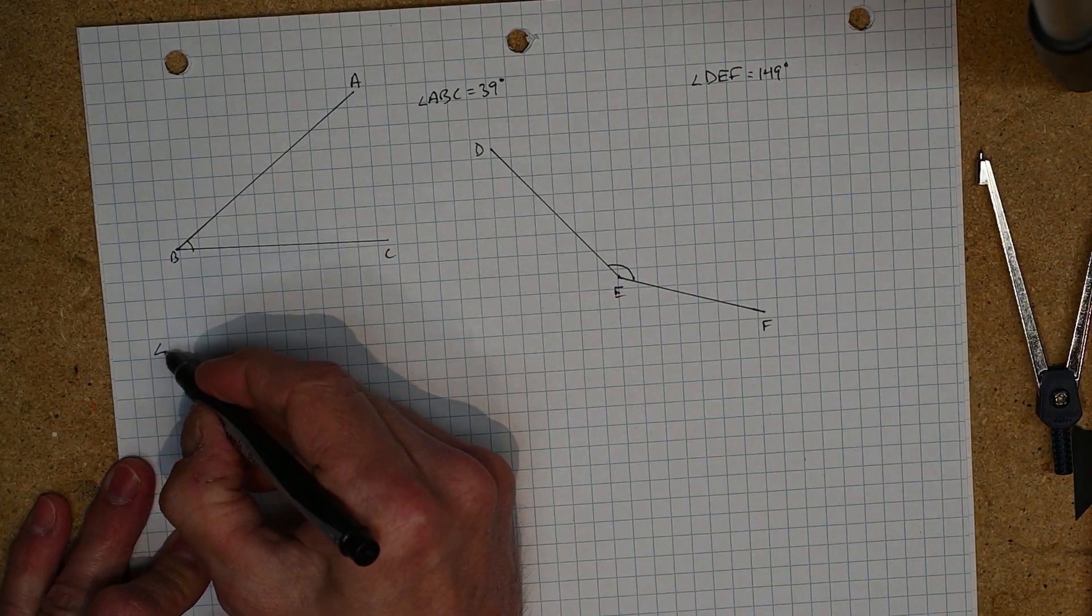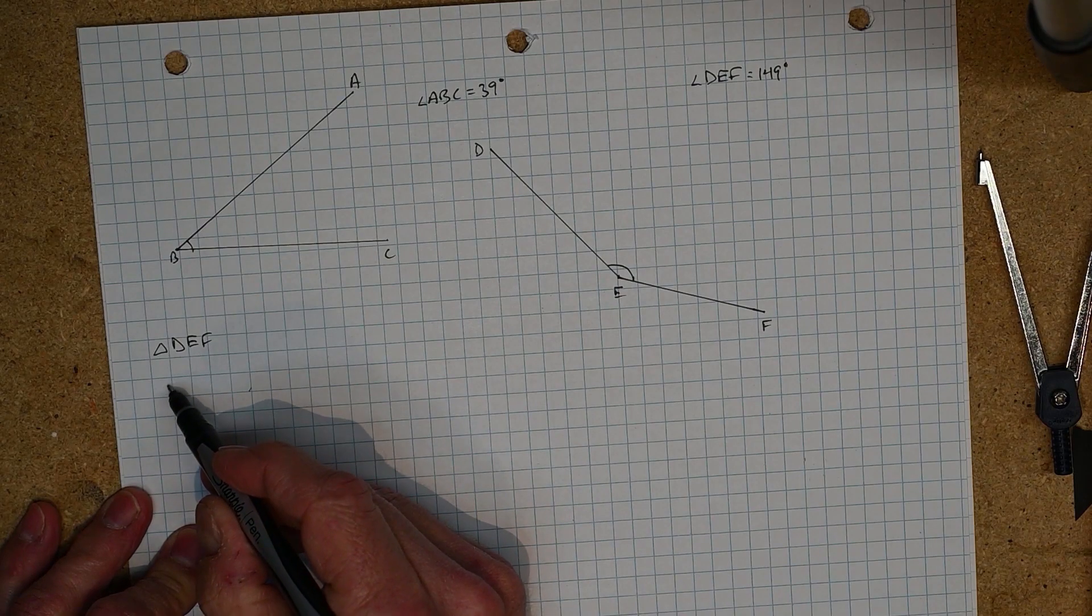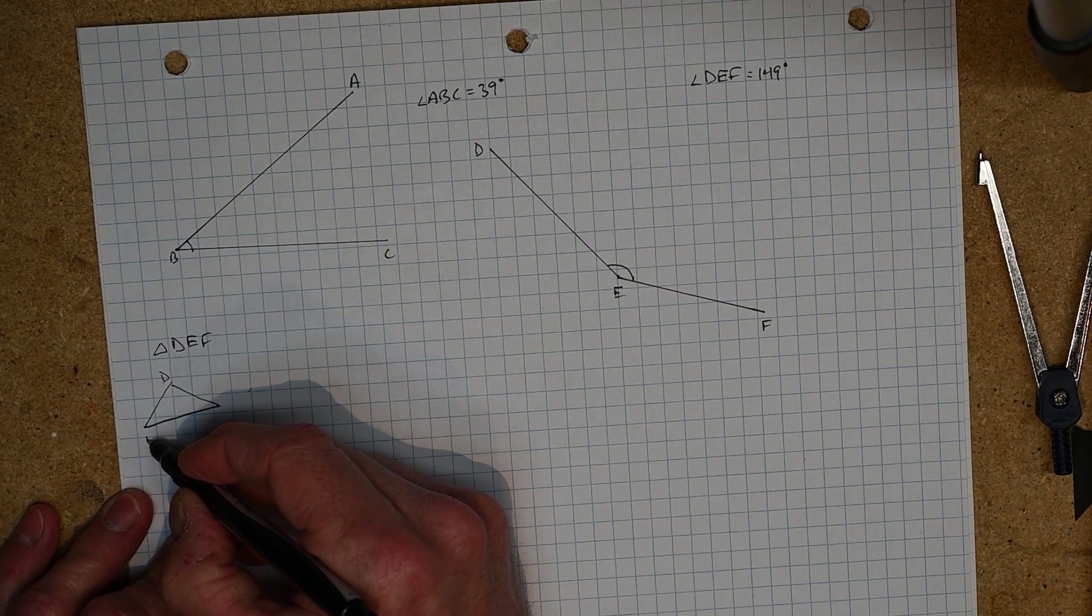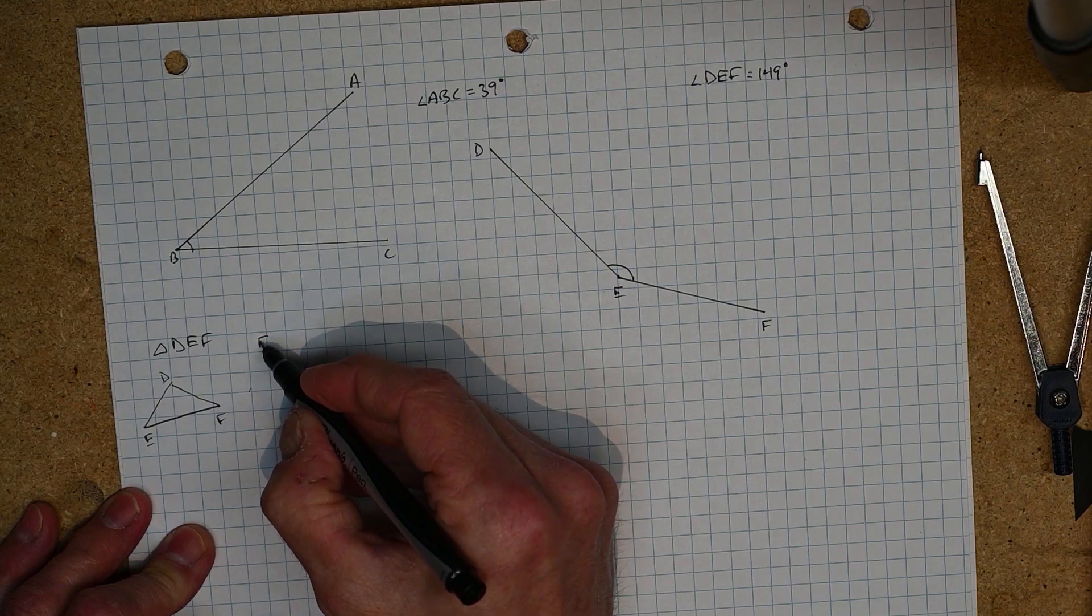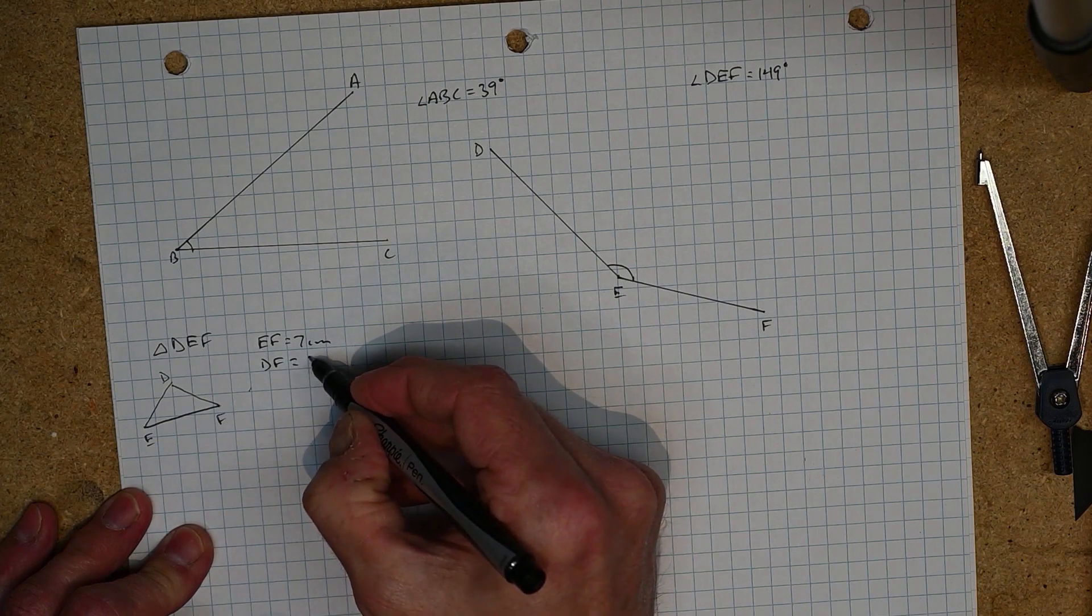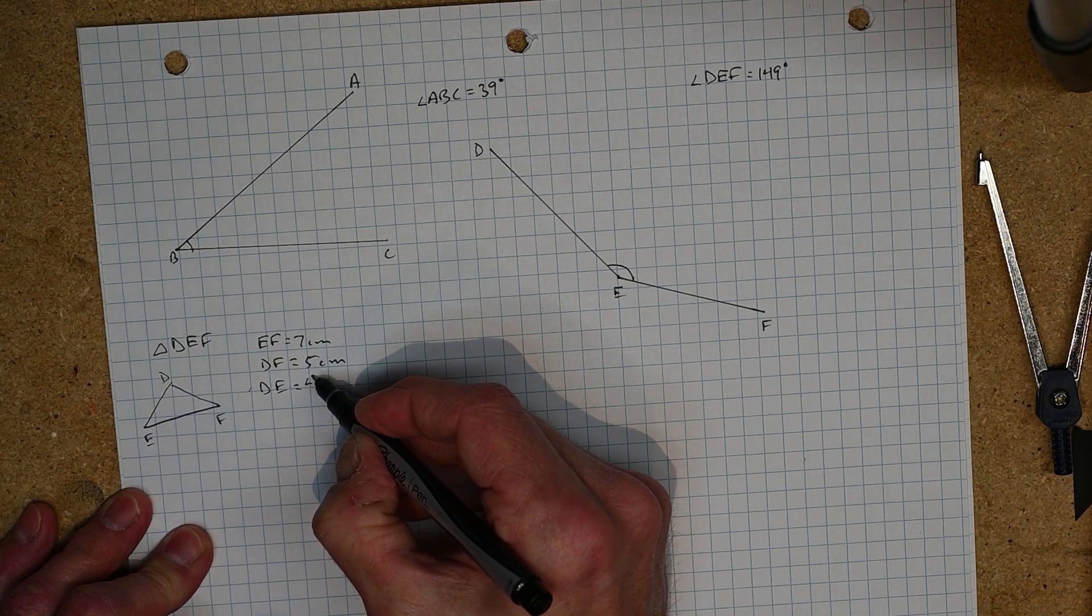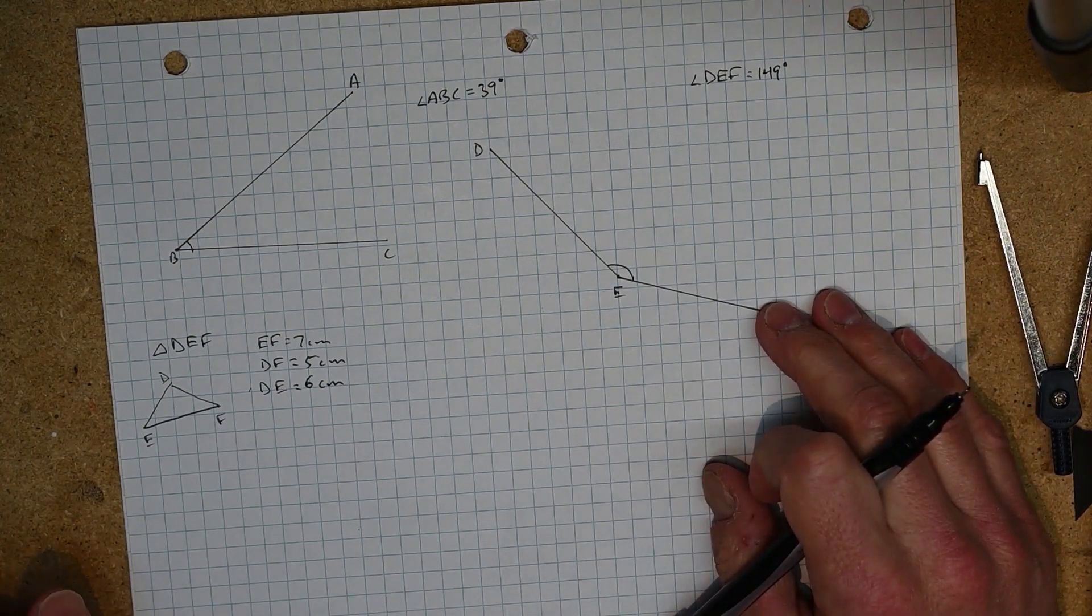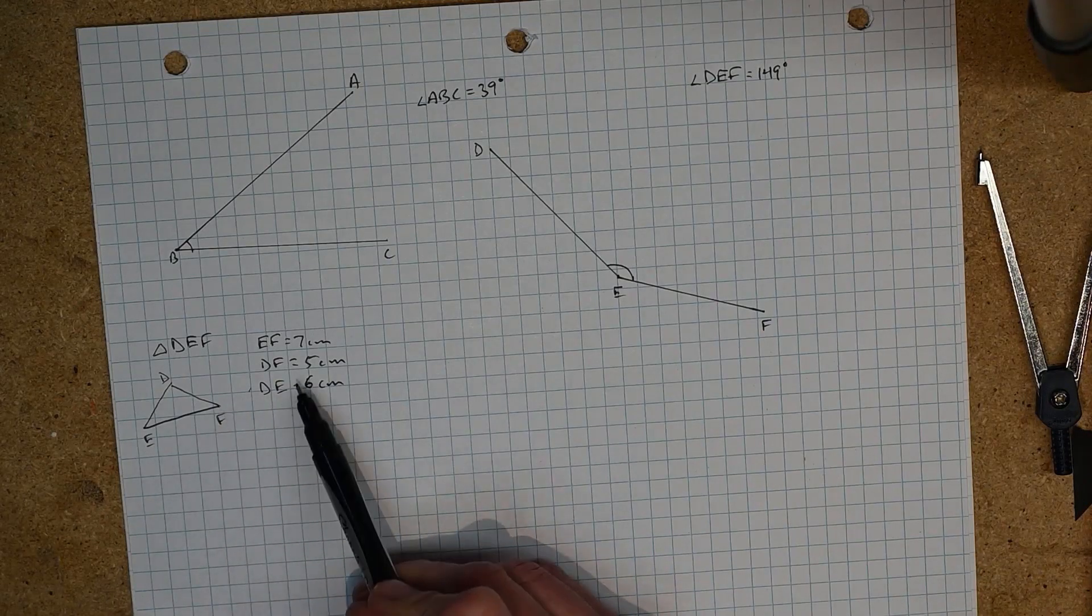So let's imagine that I wanted to draw, let's call it triangle DEF, and I'll begin with a sketch of that triangle: D, E, F. And let's imagine that we wanted to have EF seven centimeters, DF five centimeters, and DE six centimeters.